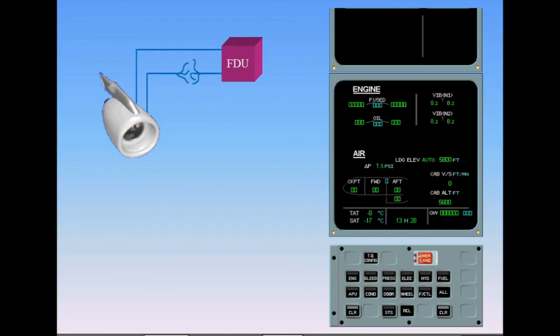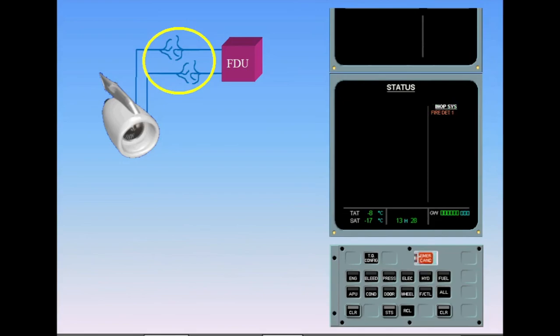Should both loops or the FDU be lost, fire detection is no longer available for the respective engine or the APU. Crew awareness and a close monitoring of the respective engine indications are now required. However, should both loops break within a five-second period, a valid fire warning is triggered.